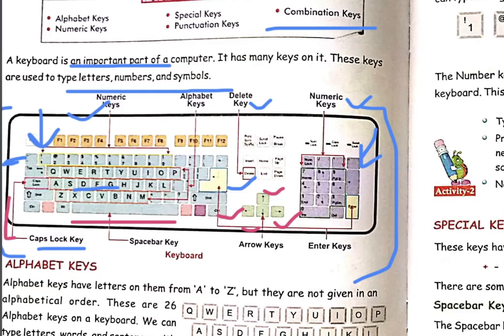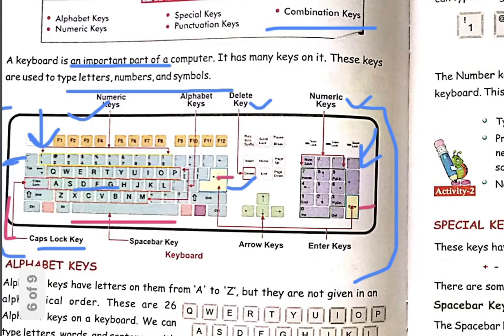The most important one is the Enter key. There are two Enter keys on the keyboard. If you want to give any input to the computer, you press Enter. Pressing Enter means you have confirmed that input — whenever you give confirmation for something, you do it by pressing the Enter button.